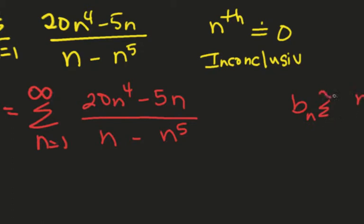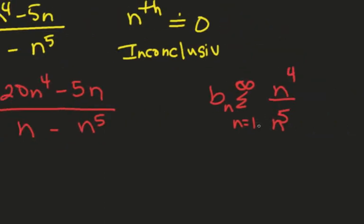What kind of series is this? It is a p-series, but it's in disguise, right? Because n to the fourth over n to the fifth becomes 1 over n. What kind of p-series is this?